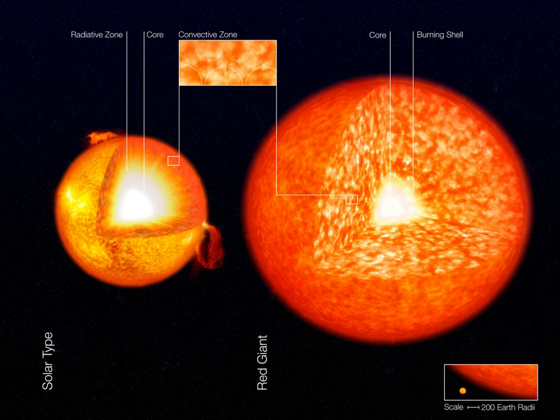This causes the outer layers to expand even further and generates a strong convective zone that brings heavy elements to the surface in a process called the first dredge-up. This strong convection also increases the transport of energy to the surface, the luminosity increases dramatically, and the star moves onto the red giant branch where it will stably burn hydrogen in a shell for a substantial fraction of its entire life.